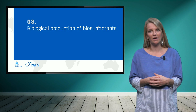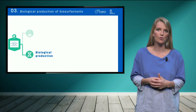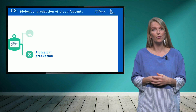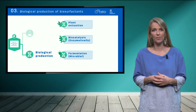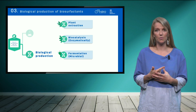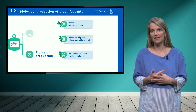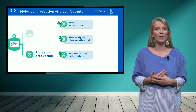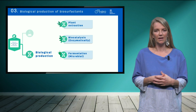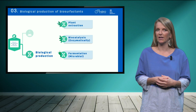The second option to produce biosurfactants is through biological production processes. These can be further subdivided into three different ways of production: first, the production by plants; second, the production by enzymes, so-called biocatalysis; and third, the production through microorganisms by a process called fermentation — the so-called microbial biosurfactants.